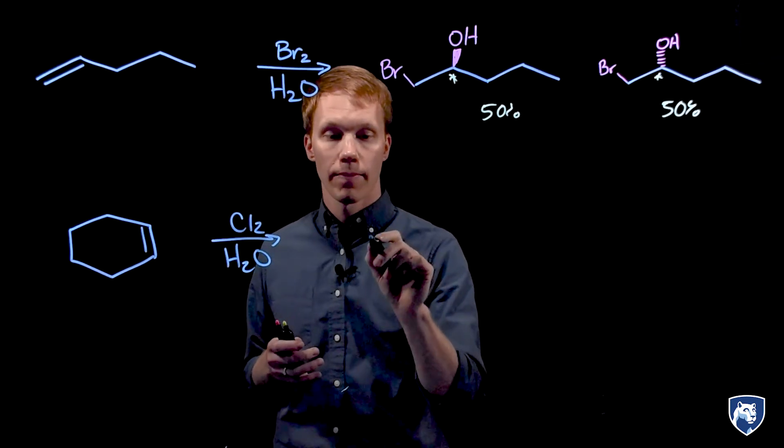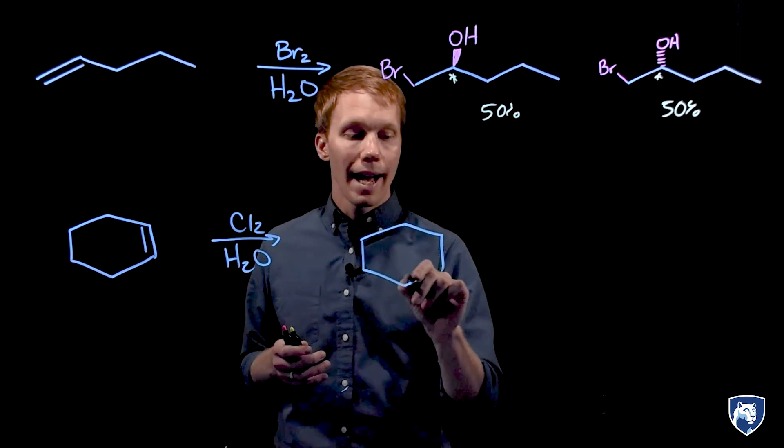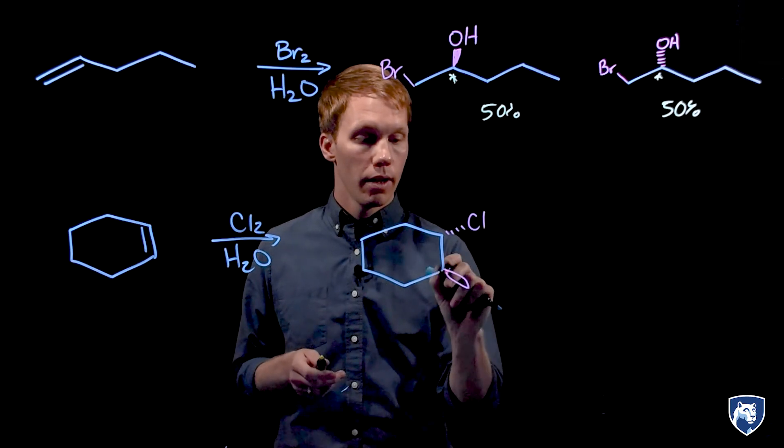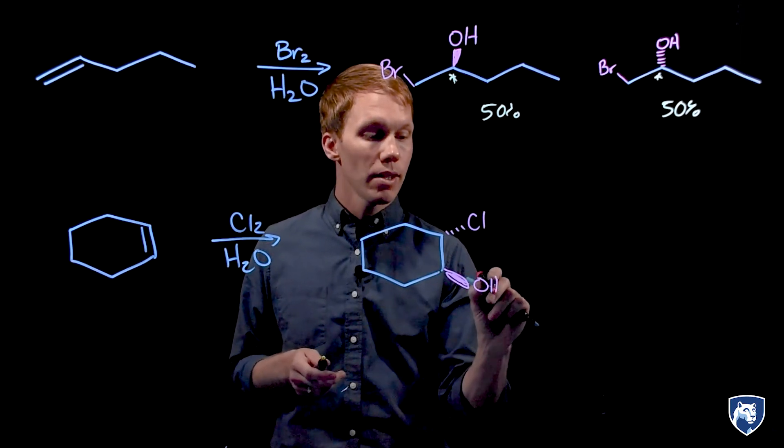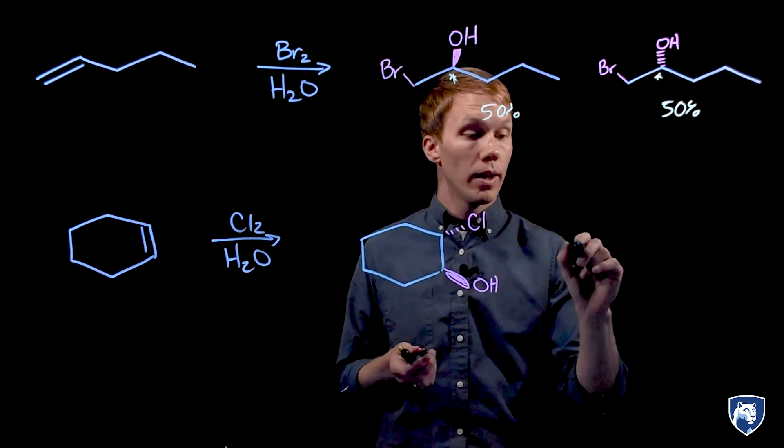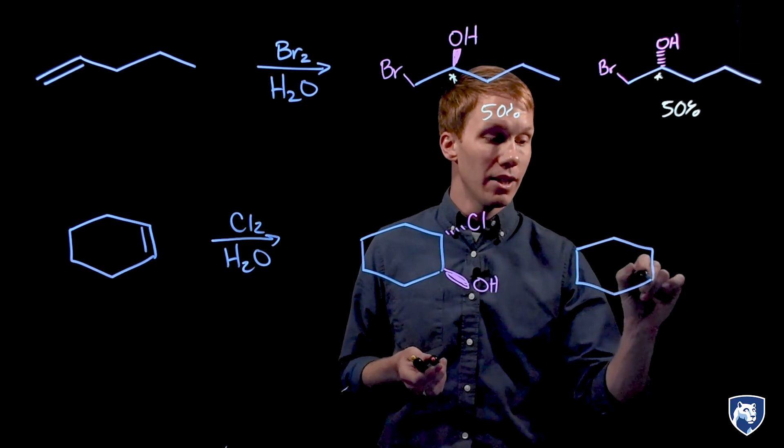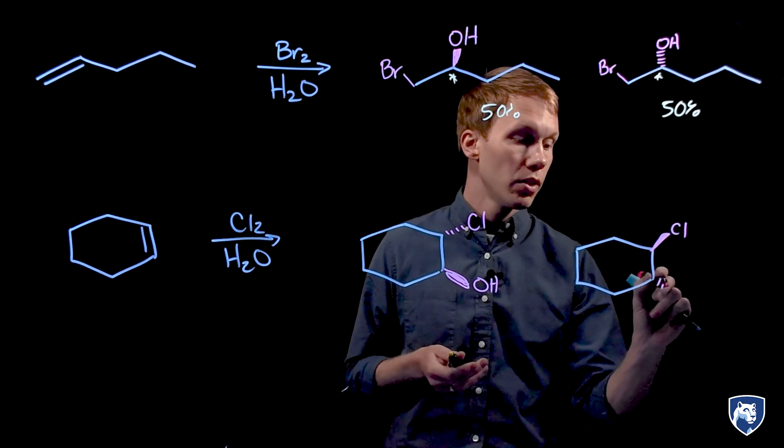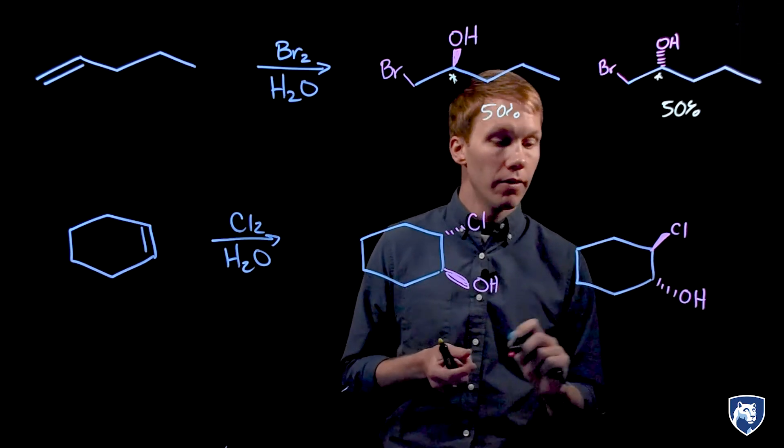So let's take a look at this cyclic example with cyclohexene. We will add chlorine and water to our double bond and this proceeds via what is known as an anti-addition where the halogen has added to the opposite face of the alcohol.